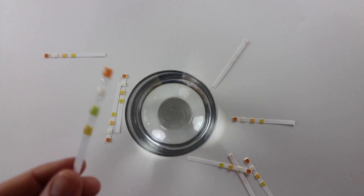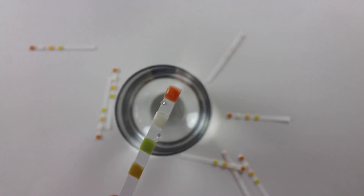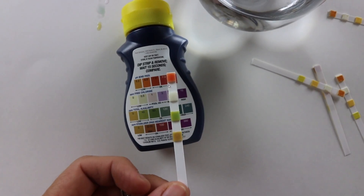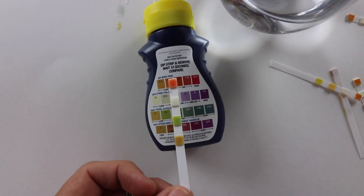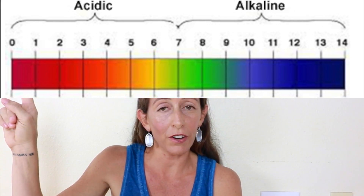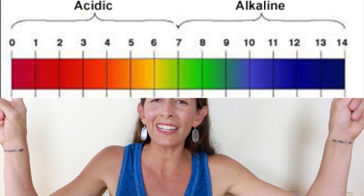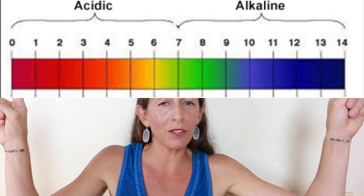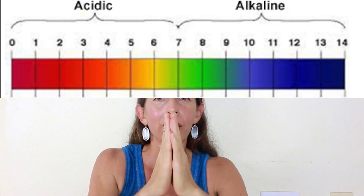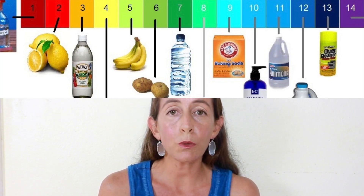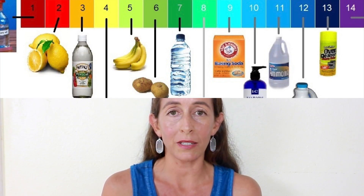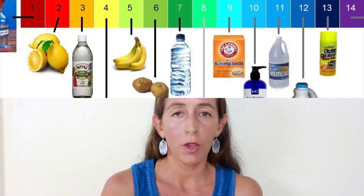pH is a measure of hydrogen ion concentration — a measure of the acidity or alkalinity of a solution. It is measured on a scale: 1 being the very most acidic and 14 being the very most alkaline. We meet right here at 7 and you've got neutral. To help you put it in perspective, let's look at this other scale.